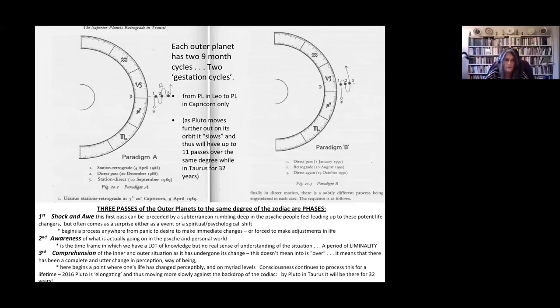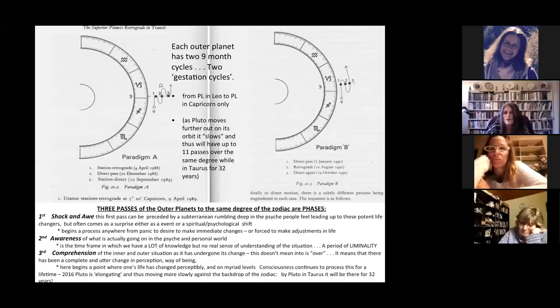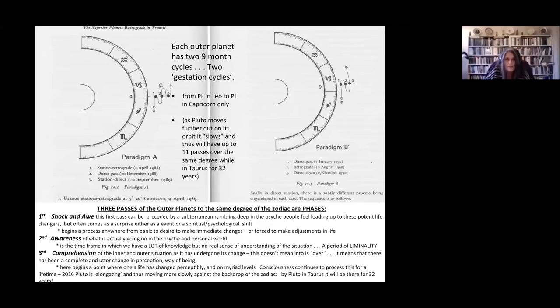There's three phases of conscious experience. The first one is the first hit—shock and awe. It's like, 'Oh my god!' The first pass of an outer planet is usually preceded by a kind of instinctive feeling: there's something going on, I feel that I'm about to undergo some massive change. It's a kind of rumbling deep in the psyche that leads up to a potent change. It can begin a process that lives anywhere from excitement to panic to desire to make an immediate change, which you should never do. That's always my advice—just hang in there, wait for the second pass.